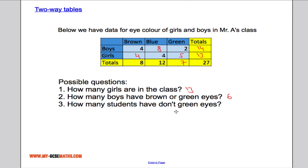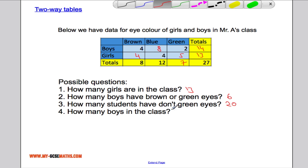How many students don't have green eyes? Well, if there's 27 students in total, but seven have green eyes, that means 20 don't have green eyes. And one more question. How many boys are there in the class? Well, we've already worked that out. There are 14 boys in the class.